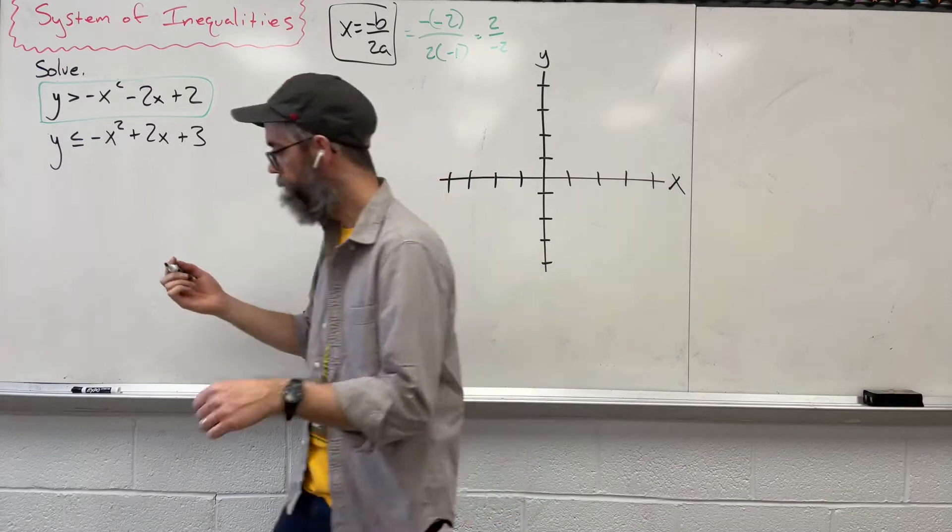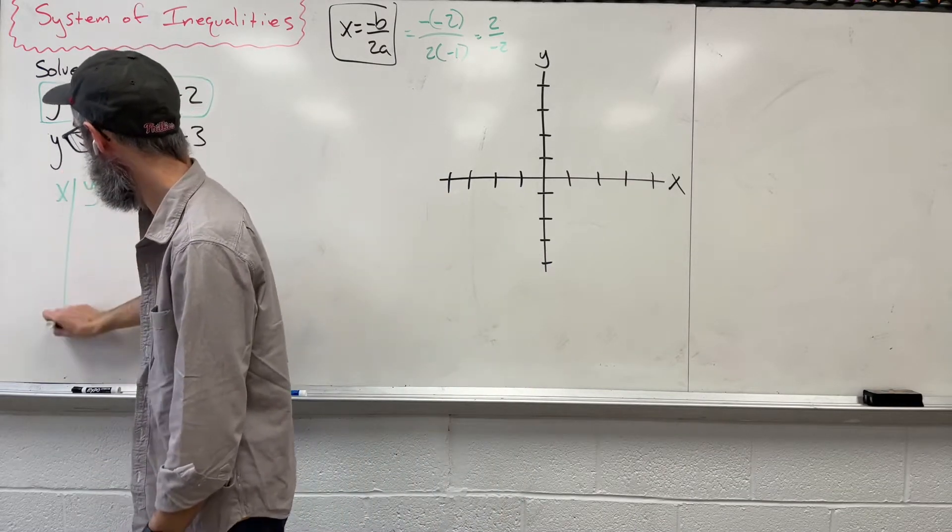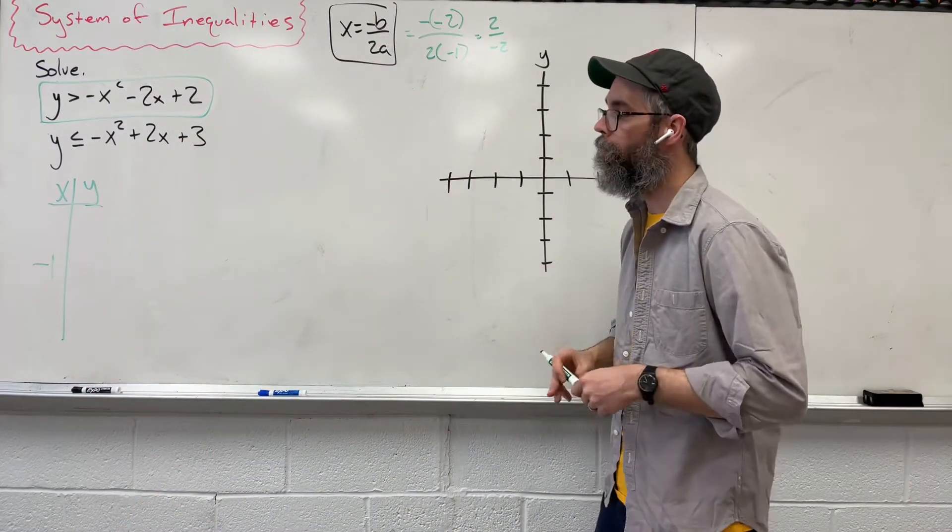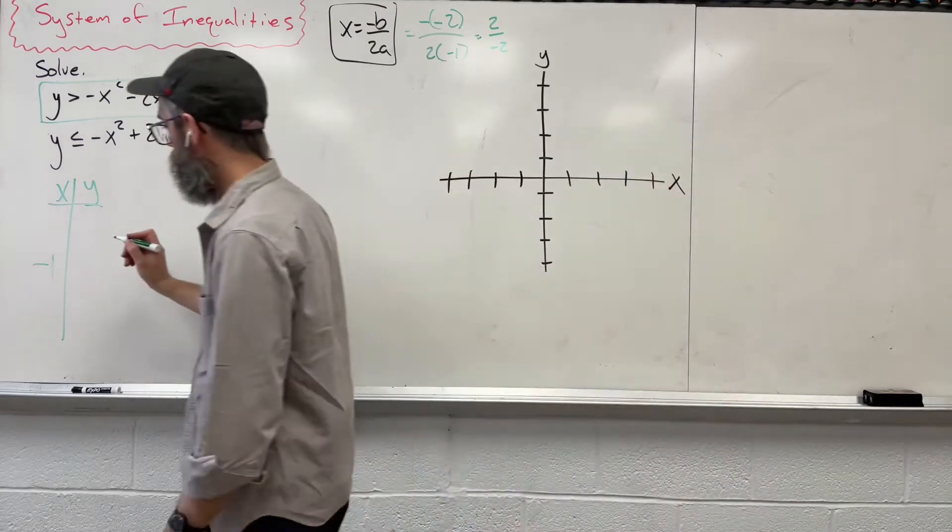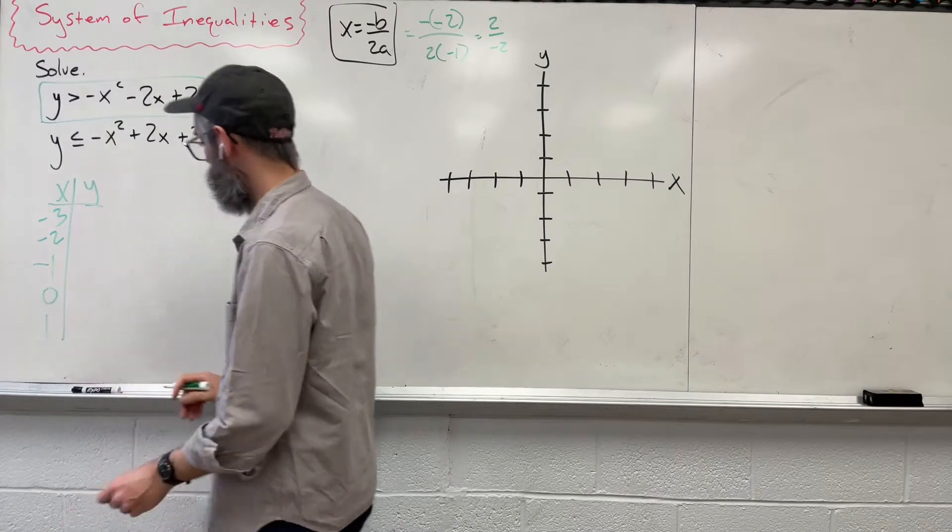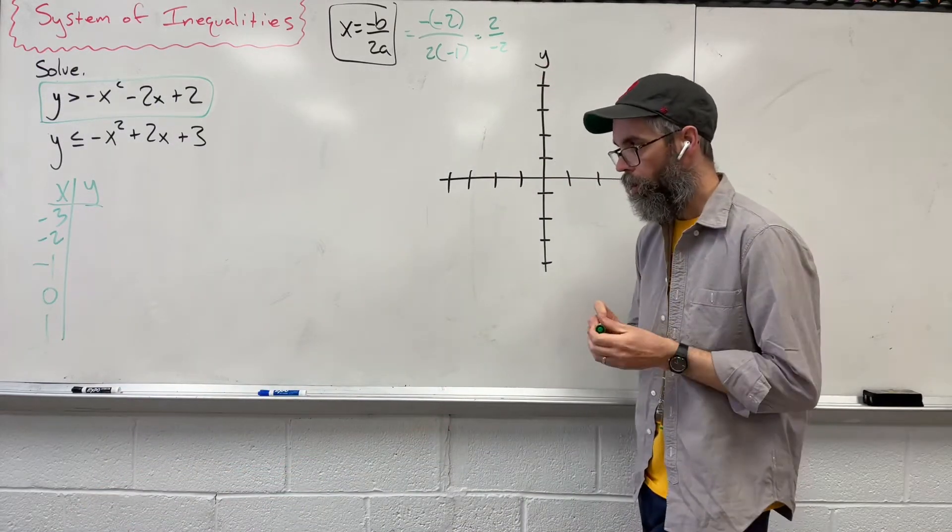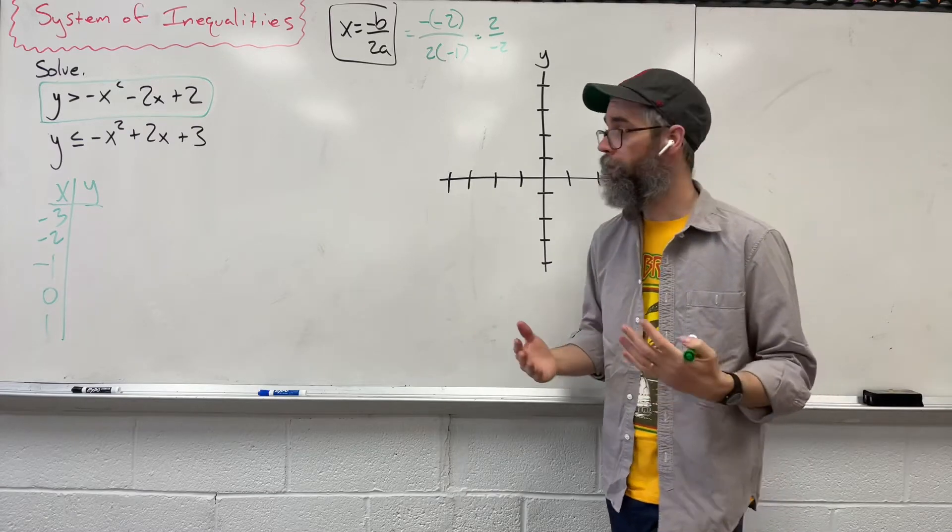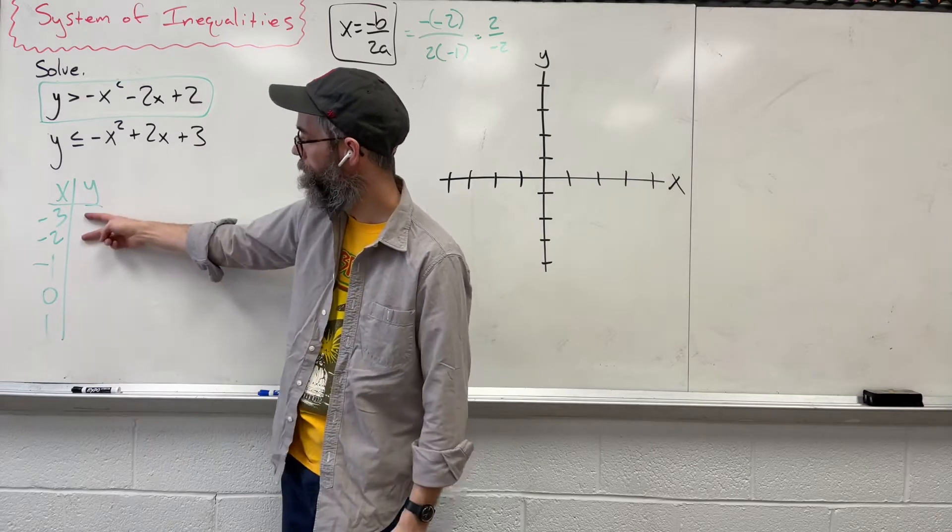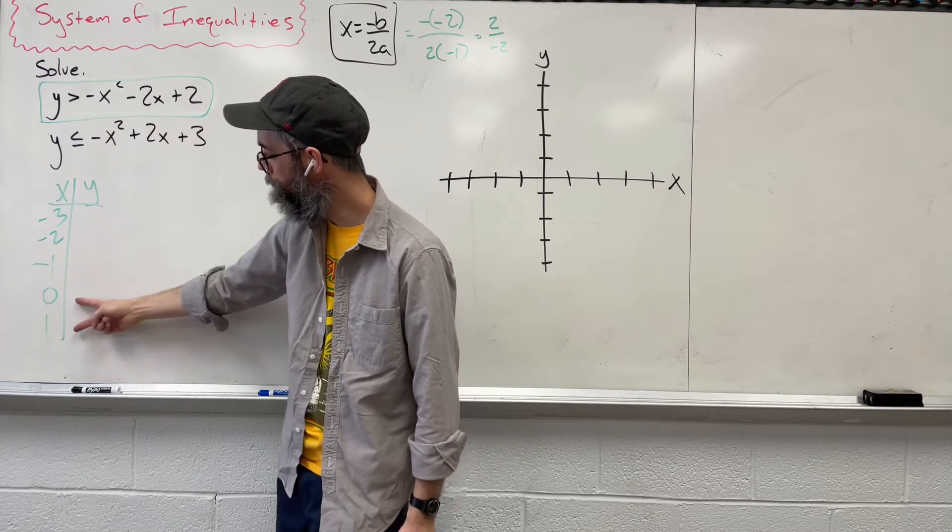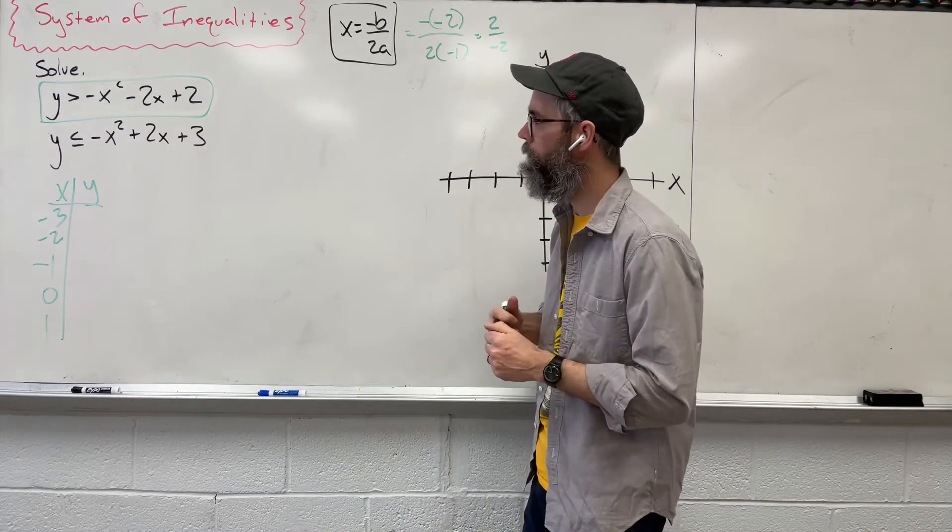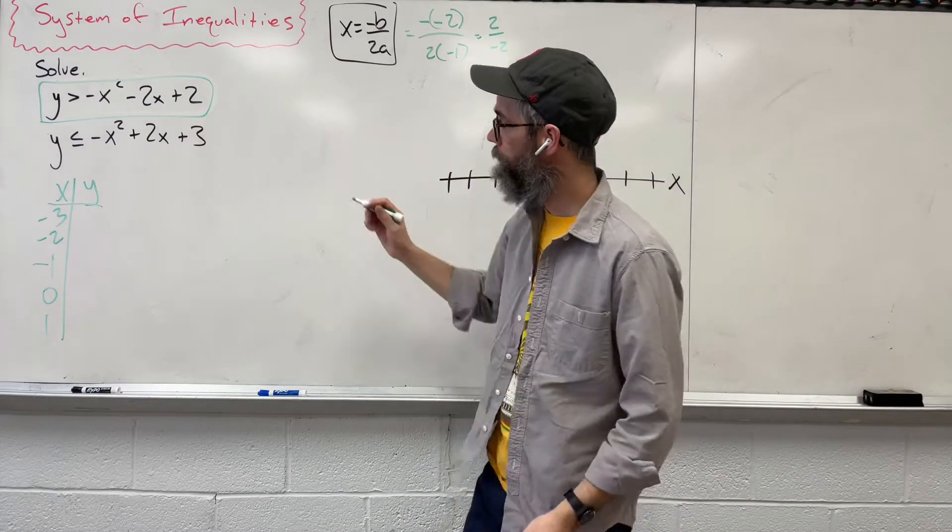When we find that axis of symmetry, we're going to now create a t-chart. That negative 1 goes right in the middle of that t-chart. From there, we need to find numbers smaller, we need to find numbers larger. What's smaller than negative 1: negative 2, negative 3, and then larger: 0 and 1. So the one thing that we know about parabolas are y values are going to repeat themselves. So instead of plugging in negative 3 and negative 2 into this inequality, I'm going to use these bottom numbers. I don't like the negatives. 0s are easier to deal with.